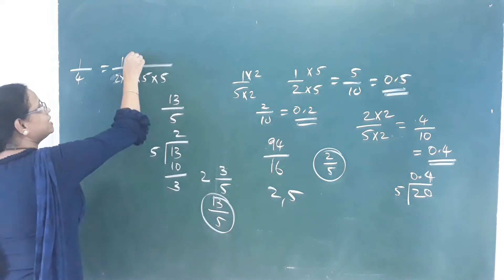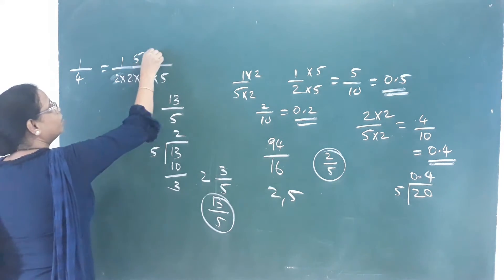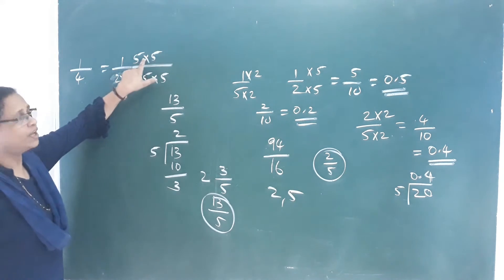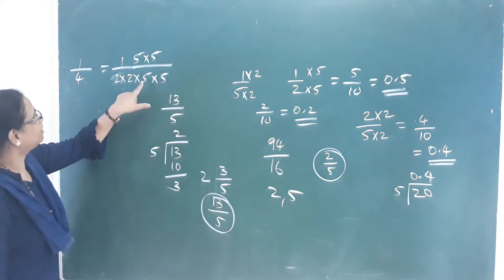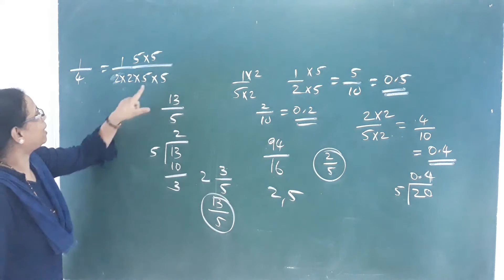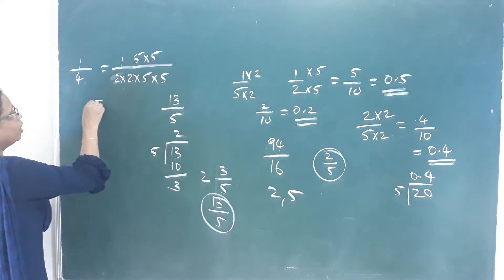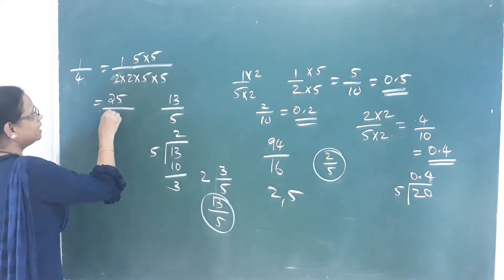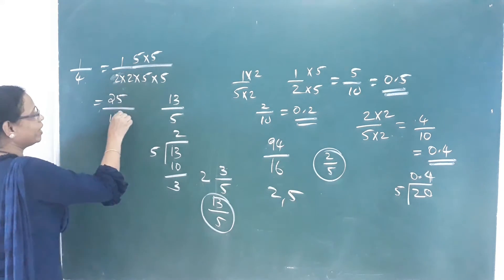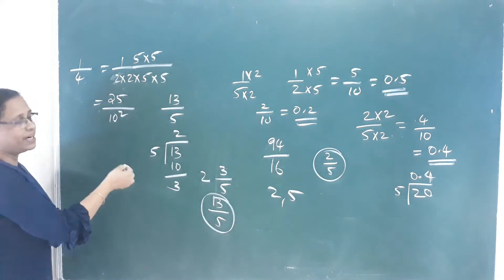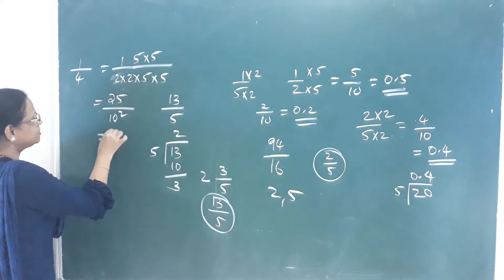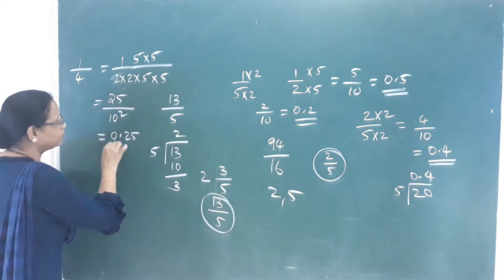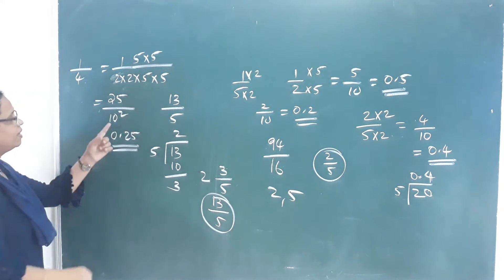If you change the value using 5 into 5, and multiply 2 into 10, you get 25 by 10 squared, which means 100. Therefore, the decimal is 0.25.